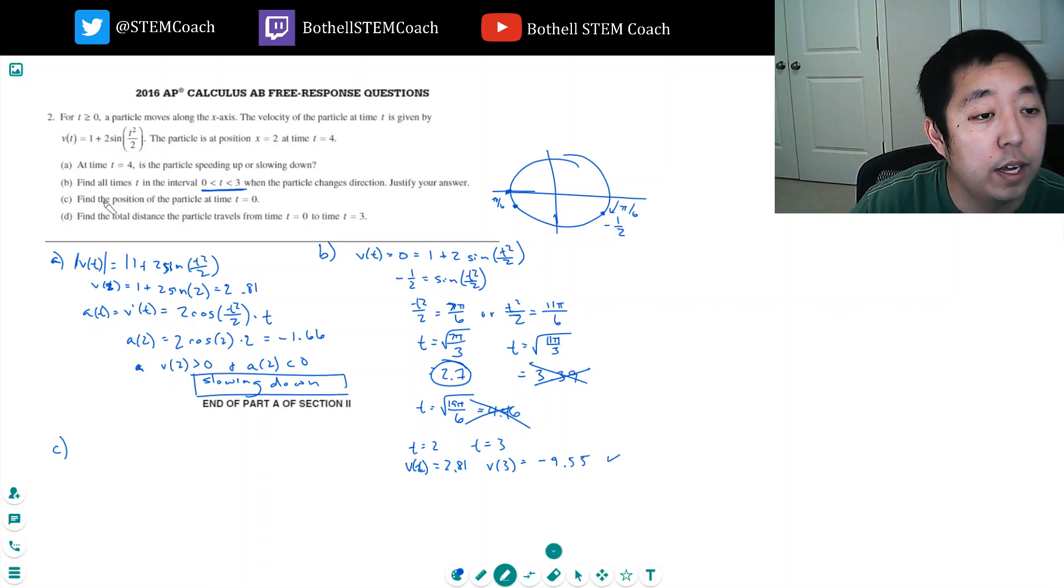Part C. Find the position of the particle at time t equals 0. So the position of the particle in general is the integral of v(t).